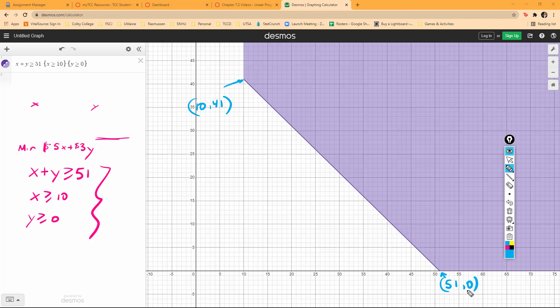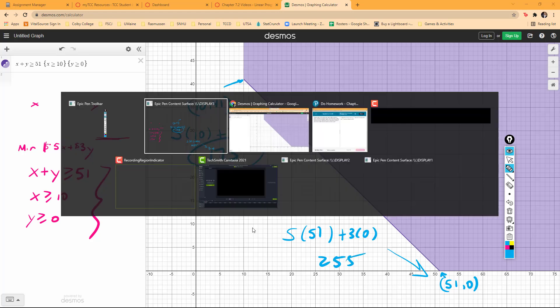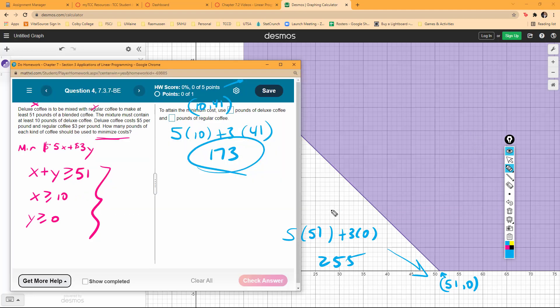I'm trying to minimize. If I plug in 5 times 10 plus 3 times 41, I get 173. And then this one right here, 5 times 51 plus 3 times 0, gives me 255. I can see that 173 is my minimum value.